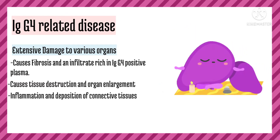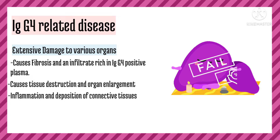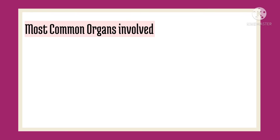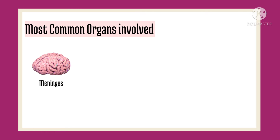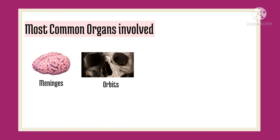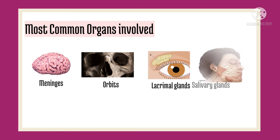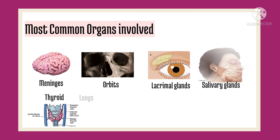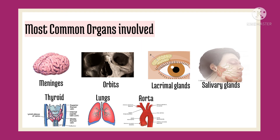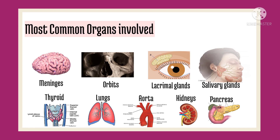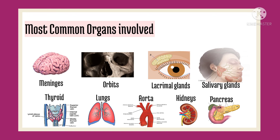Thus, organ dysfunction or organ failure may occur, with the possibility of death if not treated immediately. The most common organs affected are the meninges, the orbits around the eyes, lacrimal or tear glands, salivary glands, thyroid, lungs, kidneys, pancreas, and bile duct. There are other organs affected as well, but these are the most common ones.